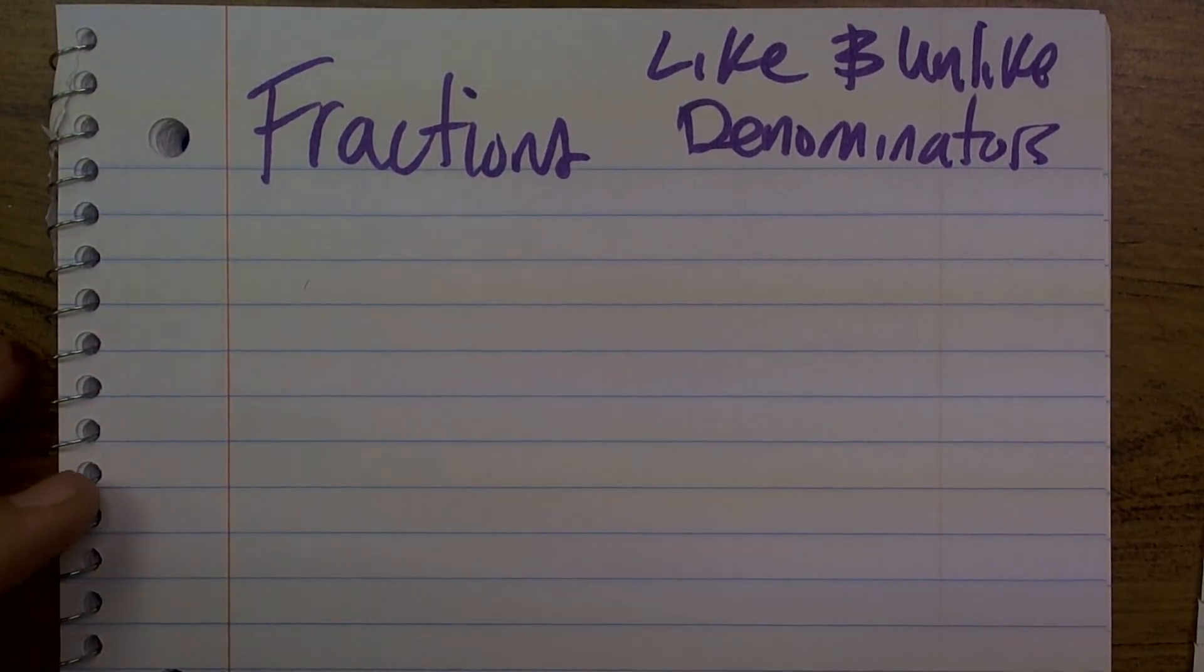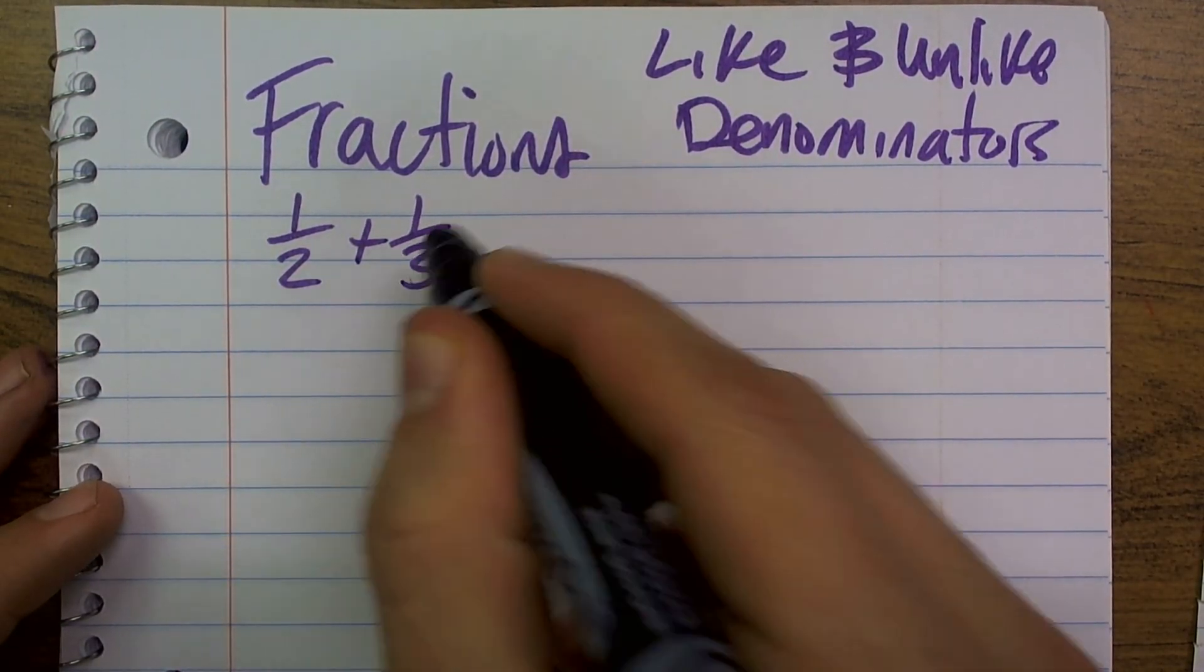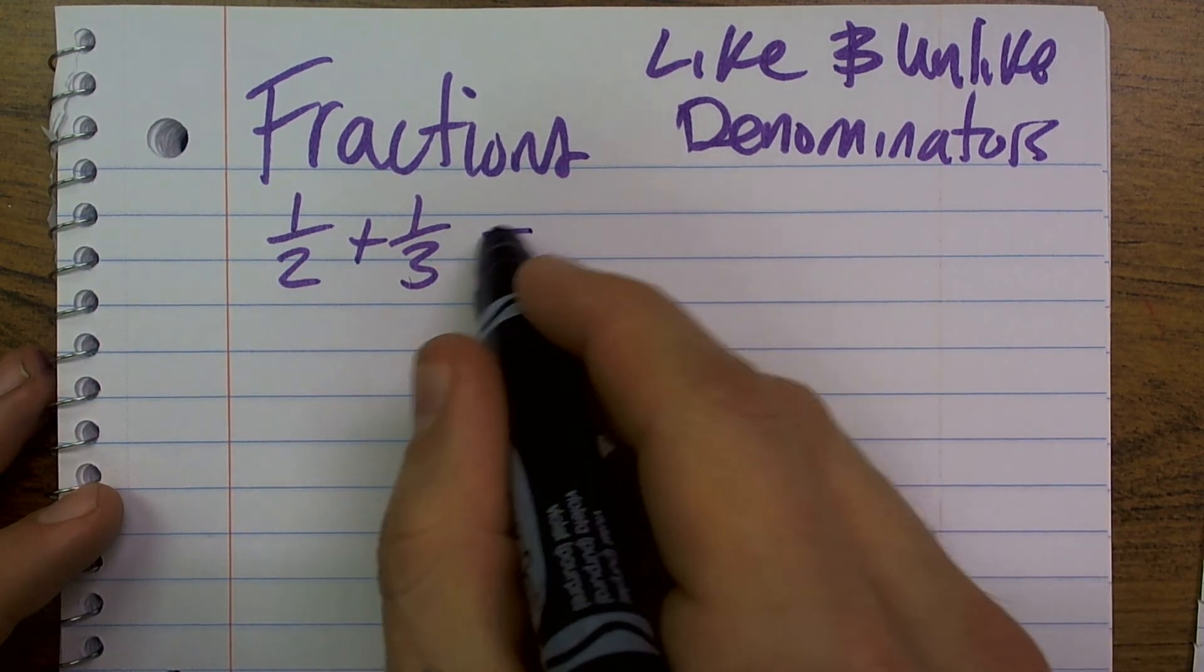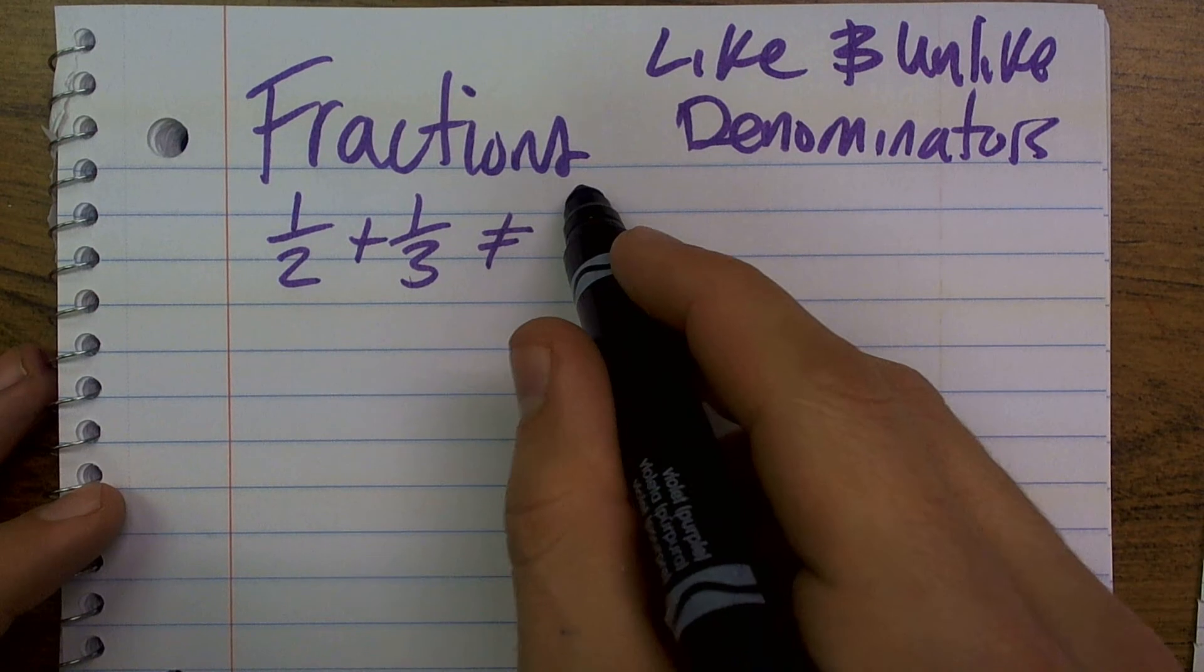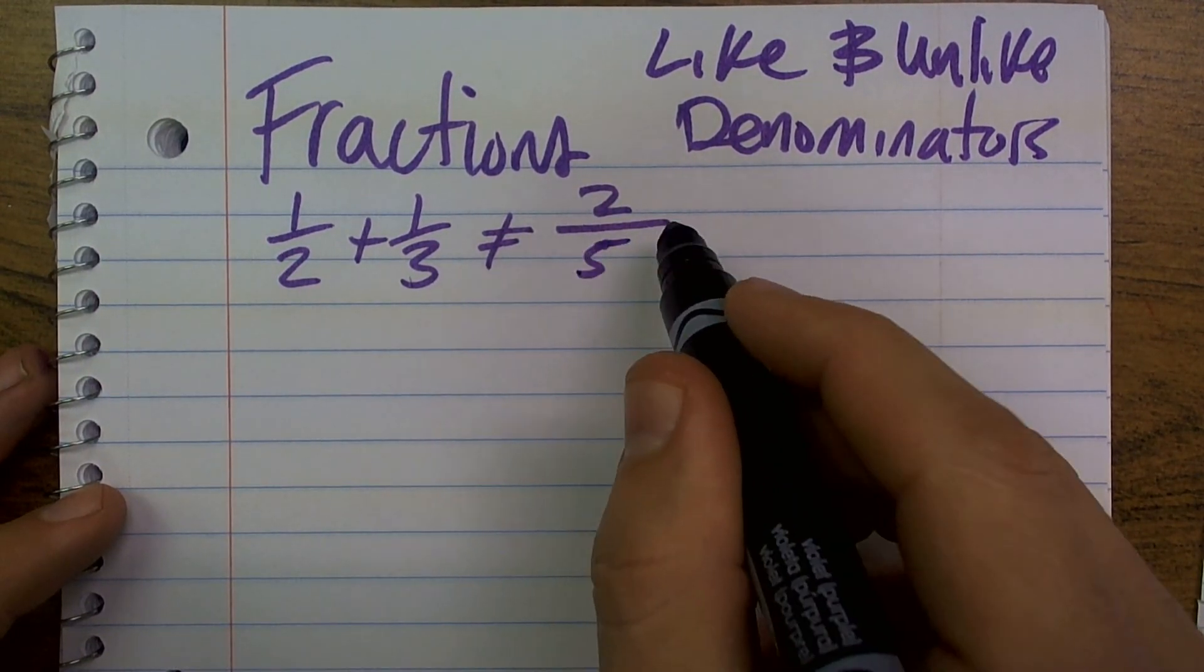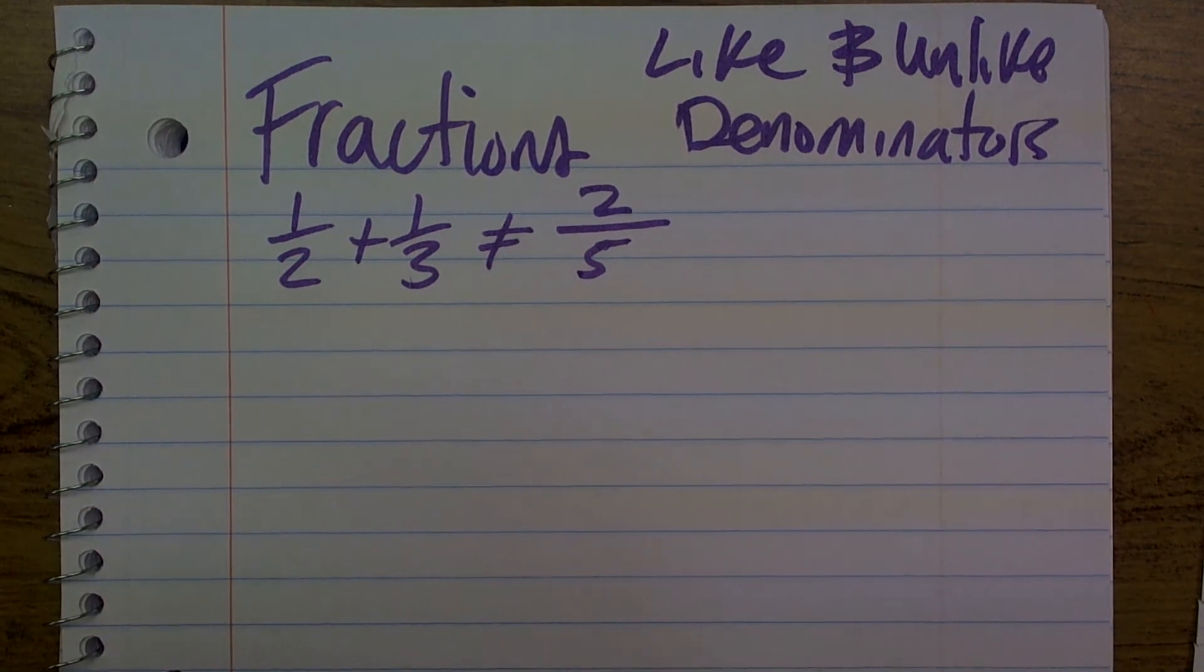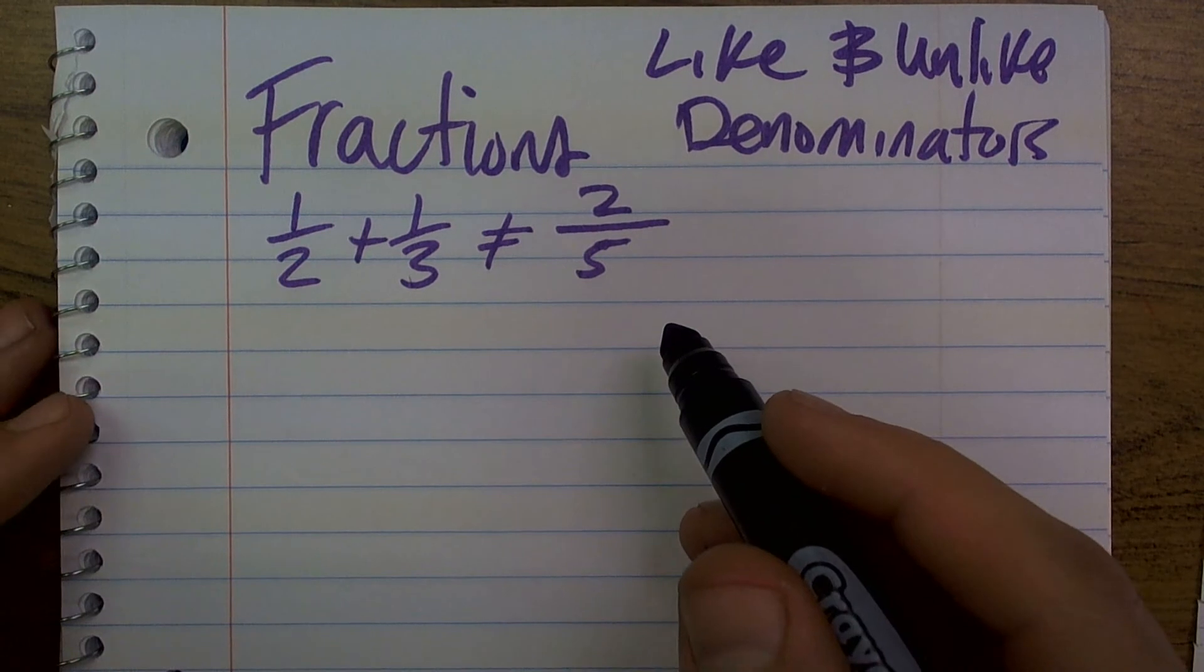Well, let me show you, if I wanted to add the fraction, one-half plus one-third, my biggest mistake that students usually come up with is they kind of think of multiplication, and they want to add the top two numbers and add the bottom two numbers to get two-fifths. Well, that is absolutely wrong, and I'm going to show you why in this video series.